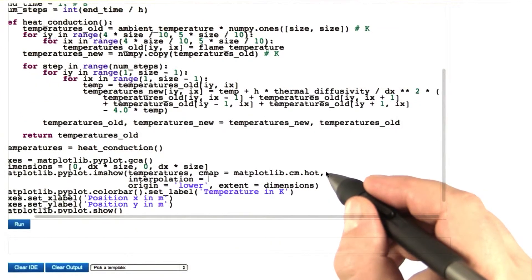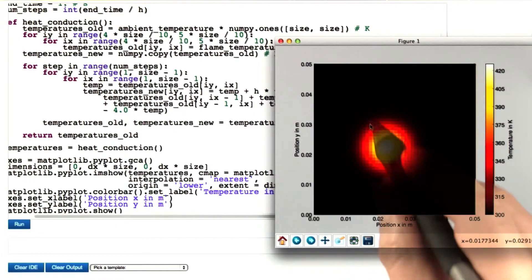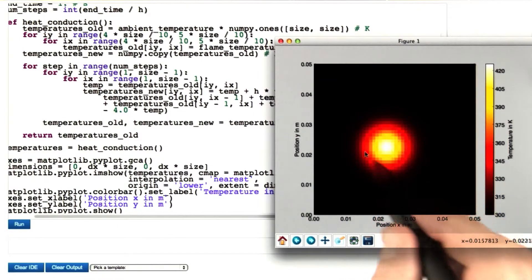So let's switch off interpolation to see how our raw data really look like. Now you can see those 50 steps in x direction and y direction. Interpolation turns this pixelated image into one that looks really smooth.